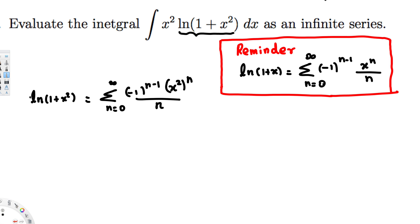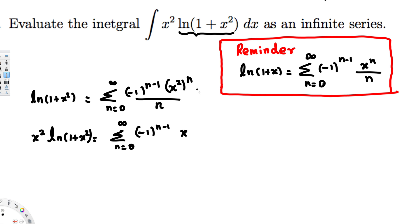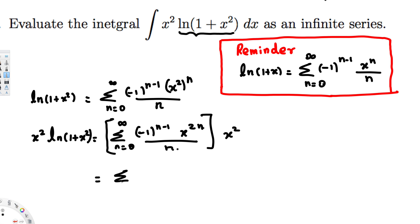Now we have x² in front, so we need to multiply the series by x². Multiplying by x² gives us x² · ln(1 + x²) on the left side. On the series side, we get Σ from n=0 to ∞ of (-1)^(n-1) times x^(2n) over n, multiplied by x². We can combine the x terms: x^(2n) times x² gives x^(2n+2). So our integrand as a series is Σ (-1)^(n-1) · x^(2n+2) / n.